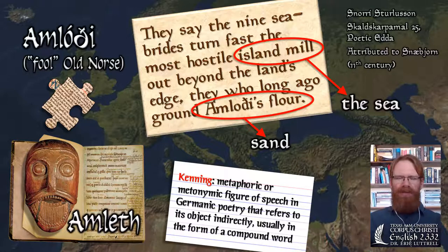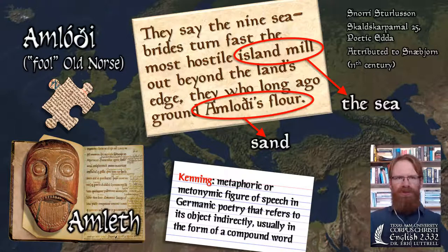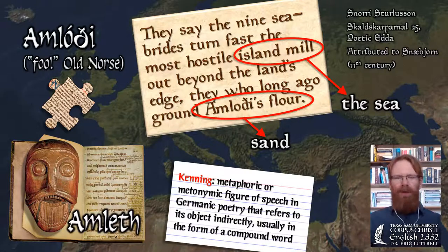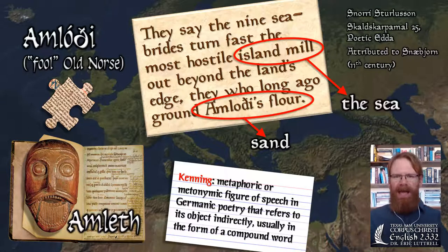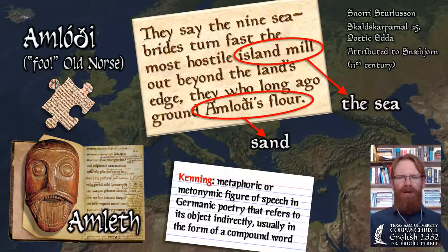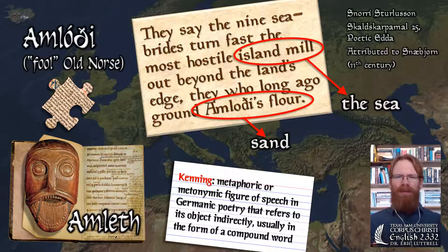This kind of expression is called a kenning — a term from Anglo-Saxon and Old Norse literature. It's a metaphoric or metonymic figure of speech that refers to an object indirectly, usually in the form of a compound. 'Amlothi's flower' is a kenning for sand; 'the island mill' is a kenning for sea. Amleth is characterized as a poet whose speech is mistaken for foolishness — referring to reality in an oblique, indirect, artistic way that most people think is ridiculous, but actually makes sense if you connect the vehicle with the tenor.